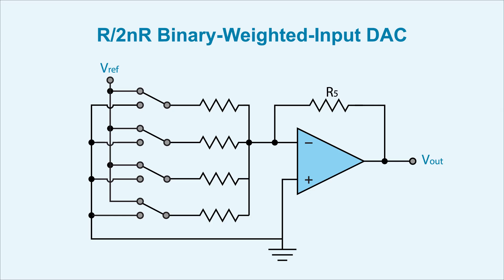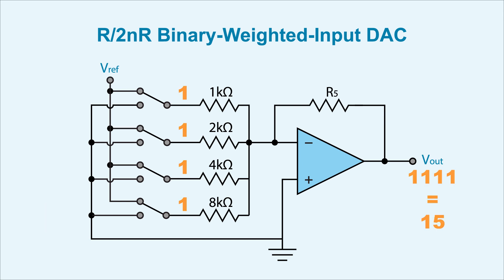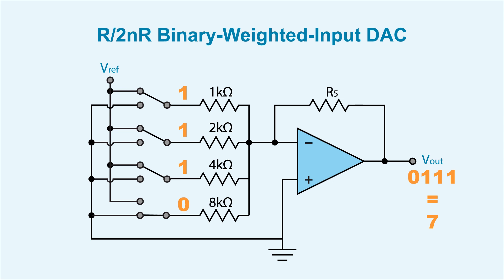In a binary weighted input DAC, also known as an R divided by 2NR DAC, each input has a different resistor value. Since each voltage input represents a binary bit, the resistor values are adjusted accordingly. For example, if V1 uses a 1 kilohm resistor, the next input would use double the resistance — V2 would use a 2 kilohm resistor, V3 4 kilohms, and V4 8 kilohms, just like the values for each binary bit. When a voltage input is pulled low, that bit outputs 0, and when the voltage input goes high, that bit outputs a 1. All the digital input bits are simultaneously applied to the DAC, meaning the circuit can interpret a whole binary number all at once.